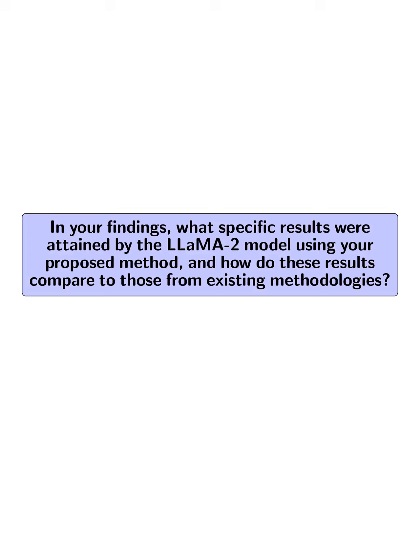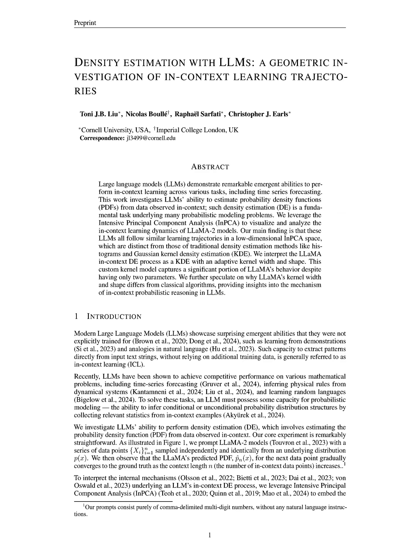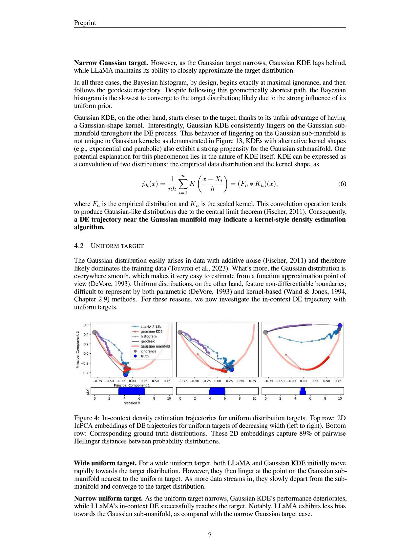In your findings, what specific results were attained by the LLaMA2 model using your proposed method, and how do these results compare to those from existing methodologies? In our findings, the LLaMA2 model demonstrated a strong ability to perform in-context density estimation for both Gaussian and uniform target distributions. Specifically, LLaMA2 was able to closely approximate the target PDFs, even as the Gaussian target narrowed, outperforming Gaussian kernel density estimation, KDE, which lagged behind in similar scenarios.